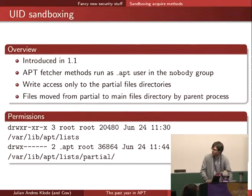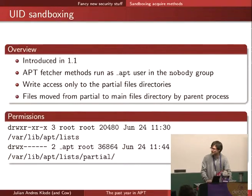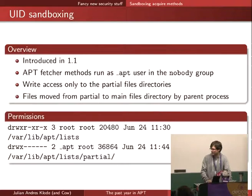The files are then moved from partial to the main directory by the parent process. You can see the permissions below: the list directory has the normal permissions you would expect, which is 755, and the partial directory can only be modified, read, and traversed by the apt user.